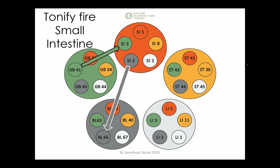Small intestine is the yang meridian of the fire element. What nourishes fire is wood, so we look for the wood point on fire, which is Small Intestine 3, and we tonify it. We also tonify the wood point on wood, Gallbladder 41. Both are on the left side. Then we reduce the action of the controlling element — water controls fire — so we disperse Small Intestine 2 and the water point of water, Bladder 66, on the right side.